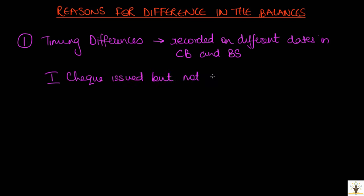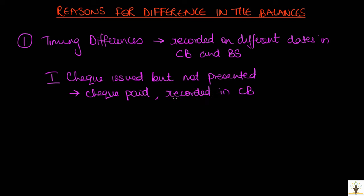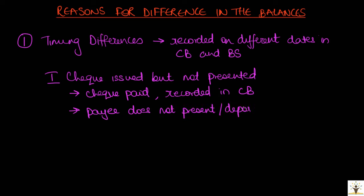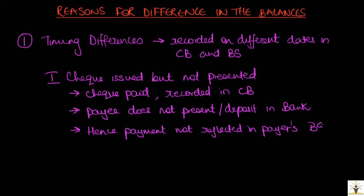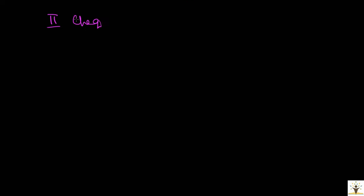The first type is checks issued but not presented. When checks are issued or paid, the entry is made in the cashbook on the date of payment based on the relevant source document. However, the payee may delay depositing the check in the bank, resulting in the check not being presented for payment. Unless the check is presented, the payment entry shall not appear in the bank statement, as the bank is not authorized to pay without a signed check from the payer.